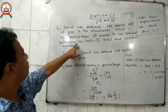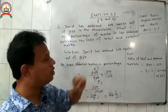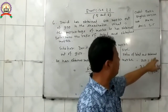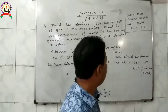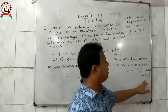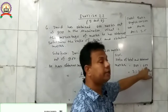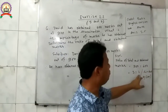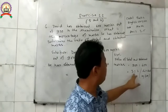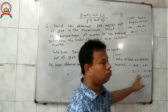Now the second part: determine the ratio of total and obtained marks. The ratio is total marks 900 to obtained marks 600. Dividing both by 300: 900 divided by 300 equals 3, and 600 divided by 300 equals 2. So the ratio of total marks to obtained marks equals 3 is to 2. This is the answer.